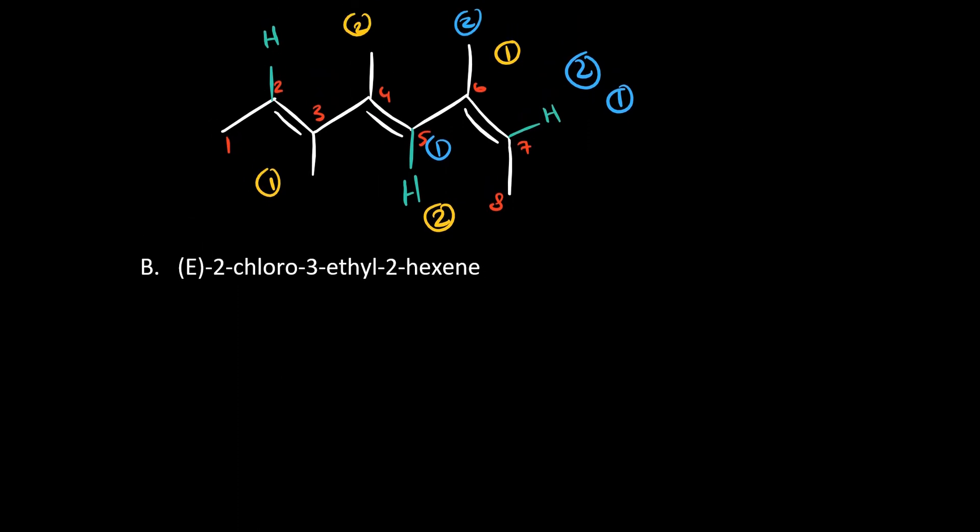In B, we have E, 2-chloro, 3-ethyl, 2-hexene. We'll draw out hexene before we do anything. From the name, we know the double bond begins at carbon 2, so it must be between 2 and 3. And then we just fill in the substituents. We have a 2-chloro and 3-ethyl, so I can draw those in right here. 2-chloro and 3-ethyl.